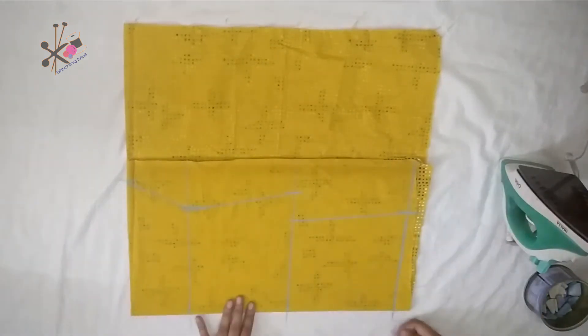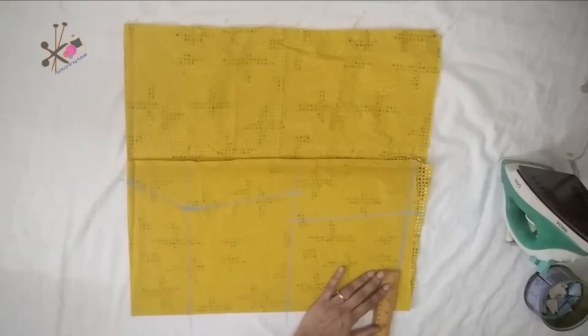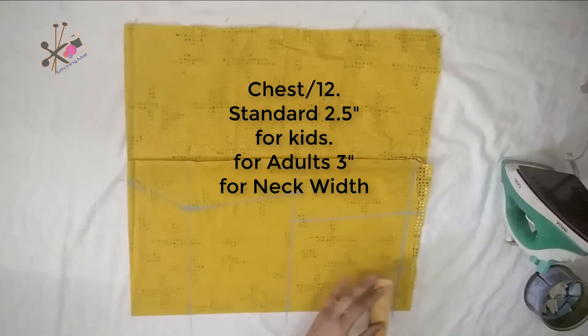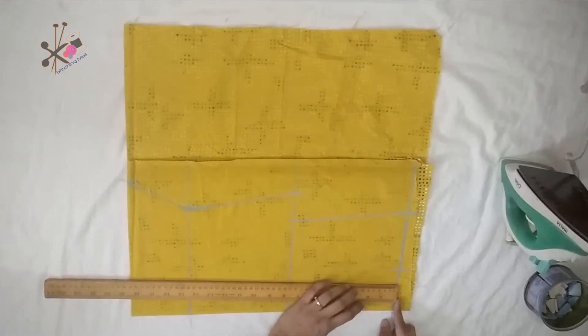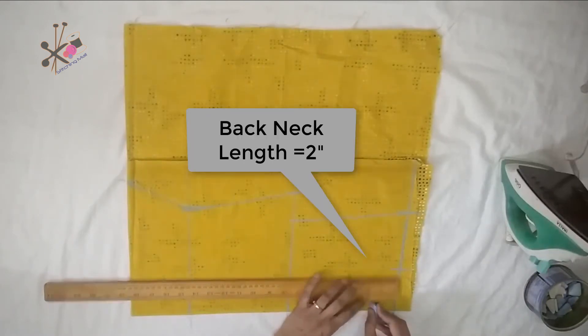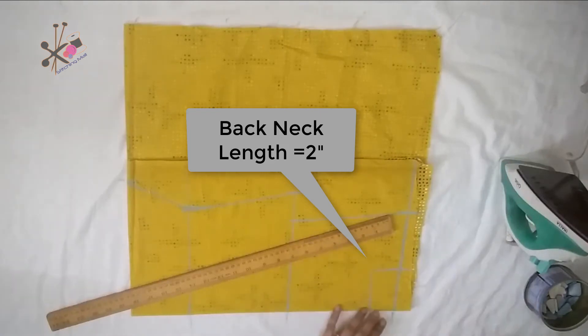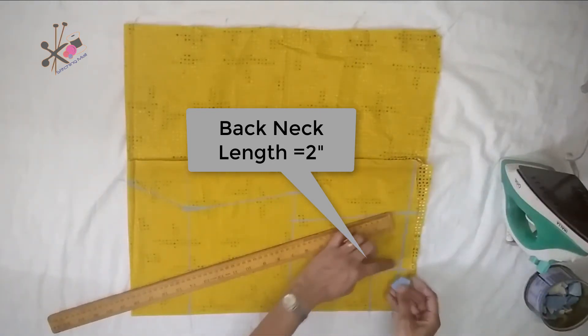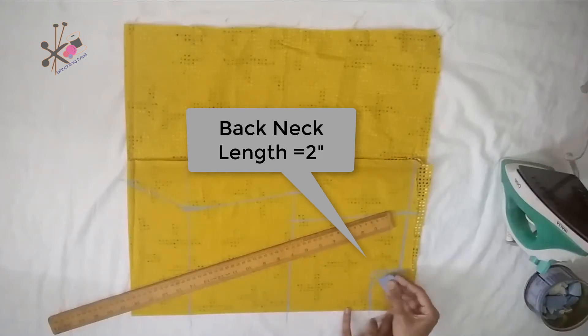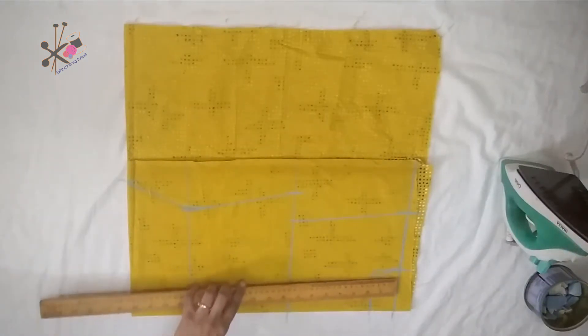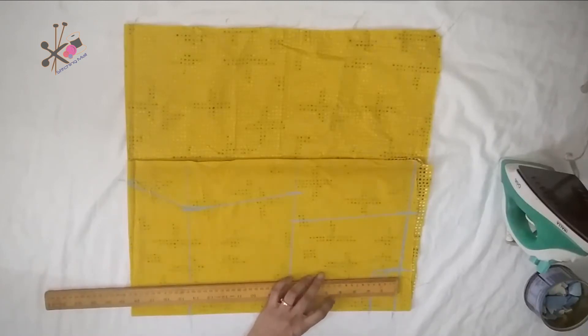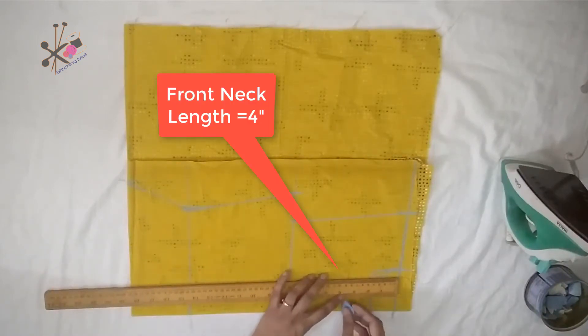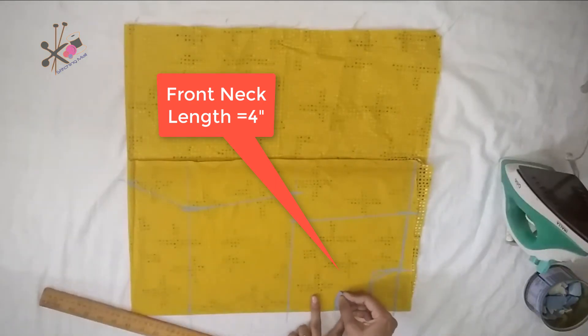Now we mark the neck width. The standard neck width for an adult person is 3 inches. Back neck length is 2 inches. Shape it. Front neck length is 4 inches maximum - you can keep till 7 - and we shape this one too.